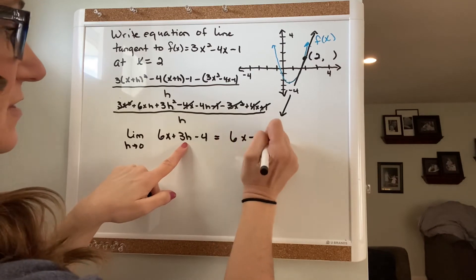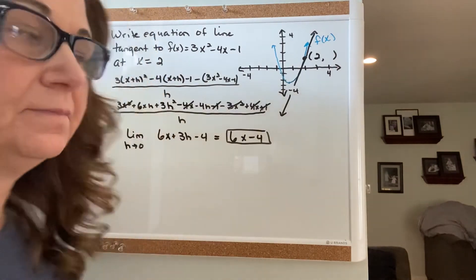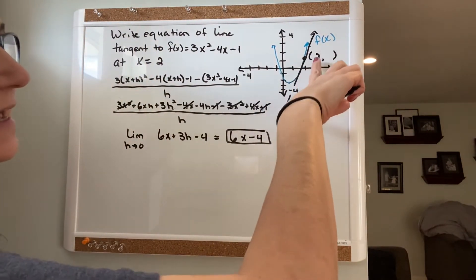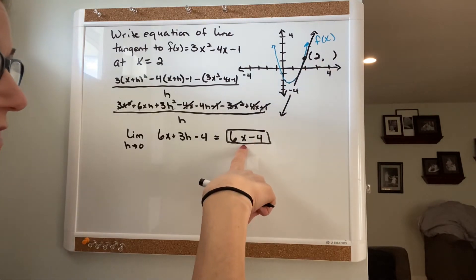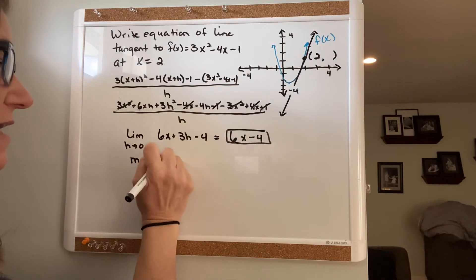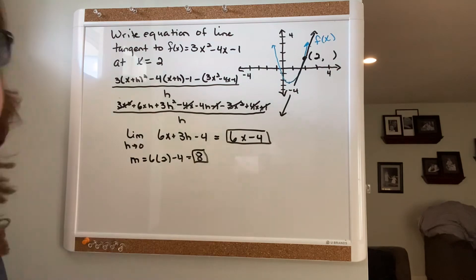And you guys now know that this is the slope formula. So to find the slope of this tangent line at x = 2, we have to plug 2 in for x. So the slope is 6 times 2 minus 4, so 12 minus 4, which is 8. There's your slope.